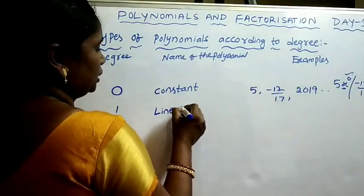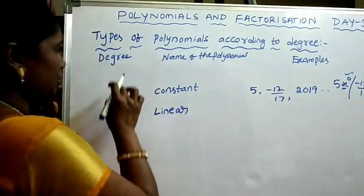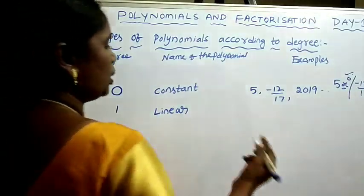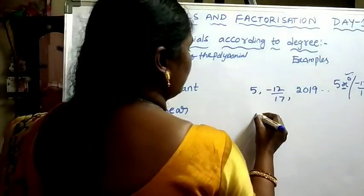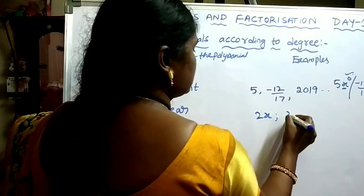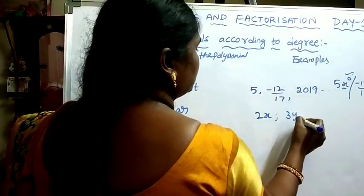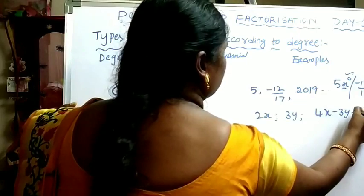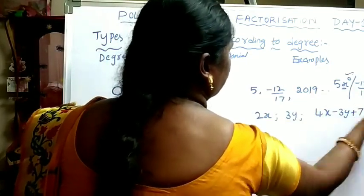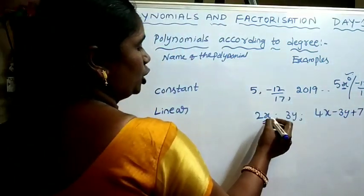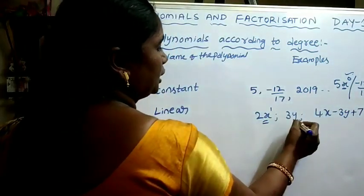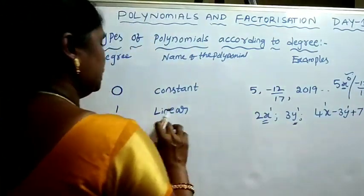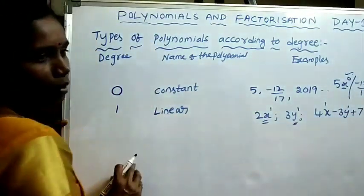If the degree of a polynomial is 1, then it is called a linear polynomial. For example, 2x, 3y, 4x minus 3y plus 7, etc. In every such polynomial, the highest degree of the variable is 1. Therefore these are linear polynomials.